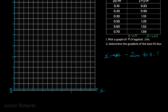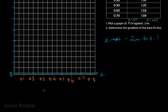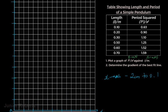On the x-axis, every two centimeters we're incrementing by 0.1, so we'll have 0.1, 0.2, 0.3, 0.4, 0.5, 0.6, 0.7, and 0.8. On the x-axis we're plotting length L in units of meters, using a scale of 2 centimeters to 0.1 meter.